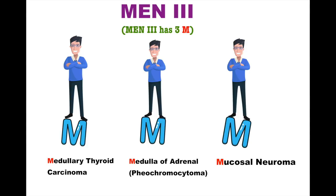In the very first picture you can see three men standing on three separate M. So MEN type 3 contains 3M. First M is medullary thyroid carcinoma. Second M is medulla of adrenal, which actually means tumour of the adrenal medulla, also called pheochromocytoma. And the third one is mucosal neuroma.